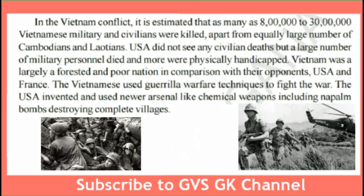In the Vietnam conflict, it is estimated that as many as 8 lakh to 30 lakh Vietnamese military and civilians were killed, apart from an equally large number of Cambodians and Laotians. The USA did not see civilian deaths, but a large number of military personnel died and more were physically handicapped. That was the situation in America.